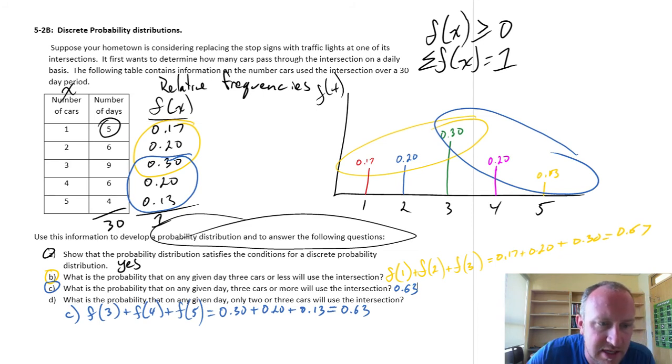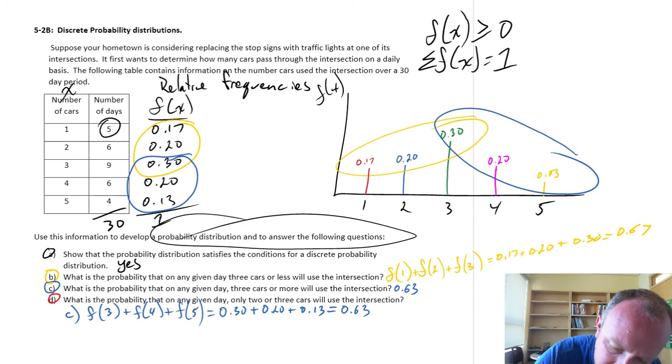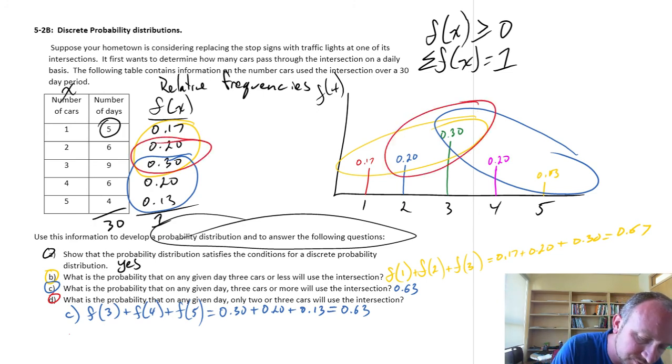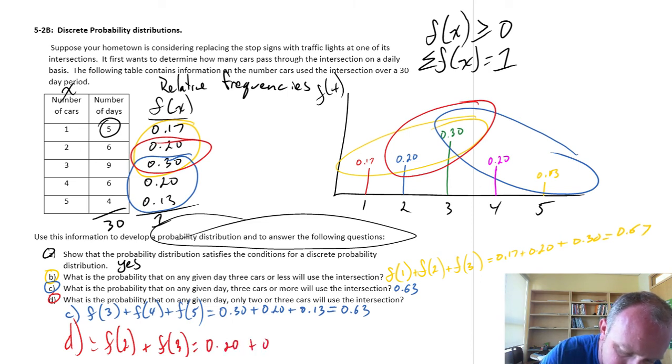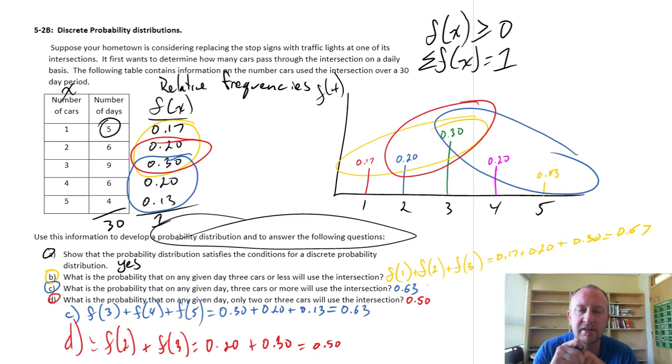Moving on to part D. What is the probability of any given day? We see two or three cars. So, now here, we're just looking at two or three cars. Two or three cars. So, part D, this is the probability of seeing two cars. Oh, my pen's doing weird things. The probability of seeing three cars. So, this is 0.2 plus 0.3. So, this is a 0.5. So, there's a 50% chance that we'll see two or three cars.